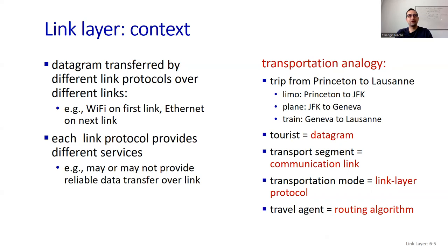The book likes analogies, so let's look at the transport analogy. We have a trip from Princeton to Lausanne. You go to JFK airport from Princeton by limousine, then take a plane to Geneva airport, then take the train from Geneva to Lausanne. Here the tourist is the datagram traveling from Princeton to Lausanne. The transport segments are the communication links — three different links — and the travel agent is the routing algorithm.